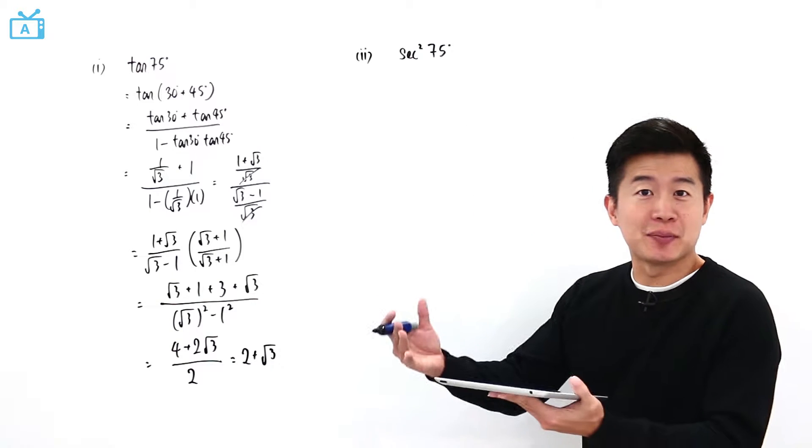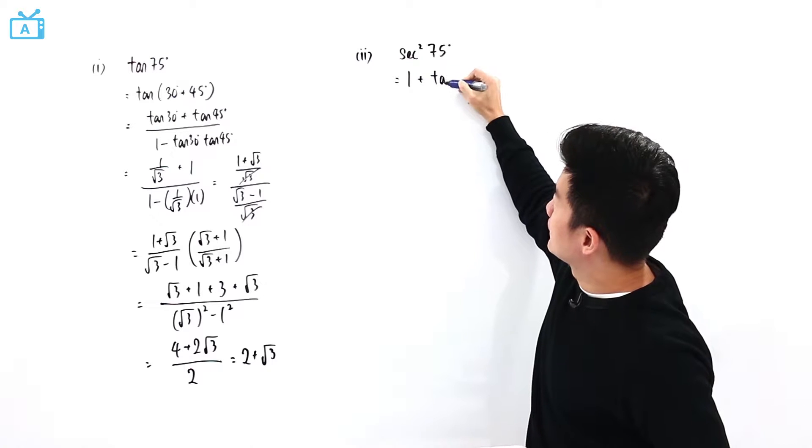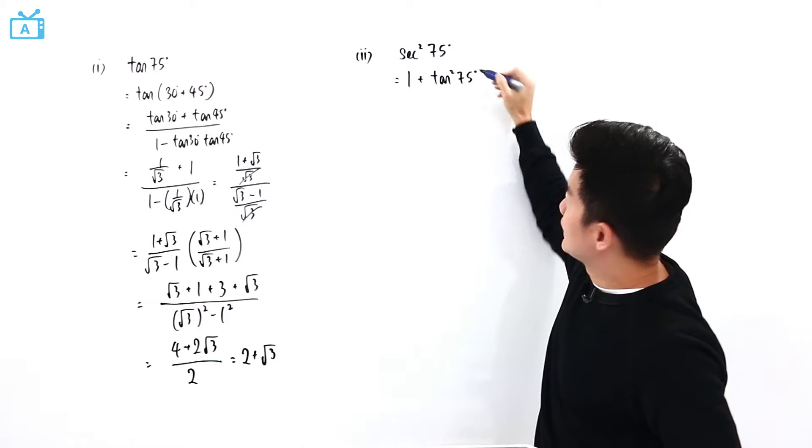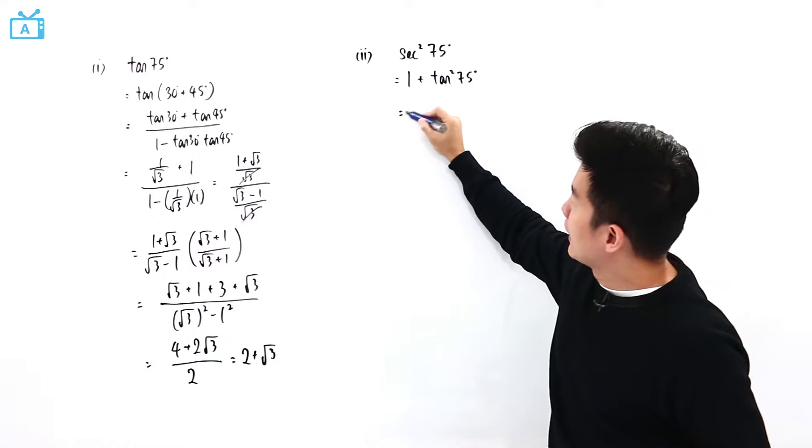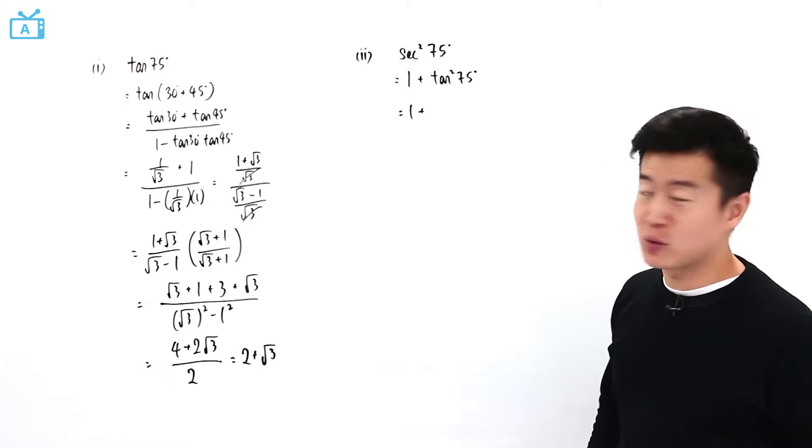Secant squared 75 degrees, by applying the trigonometric identities, can actually be rewritten as 1 plus tangent squared 75 degrees. And tangent 75 degrees we have worked it out from the previous part to be 2 plus square root of 3.